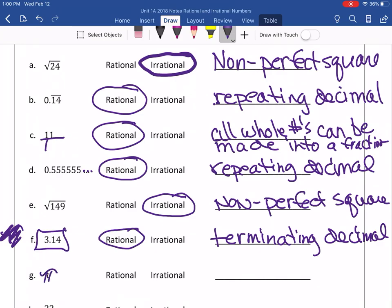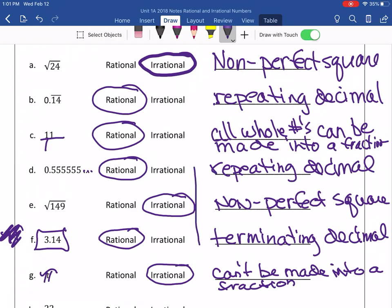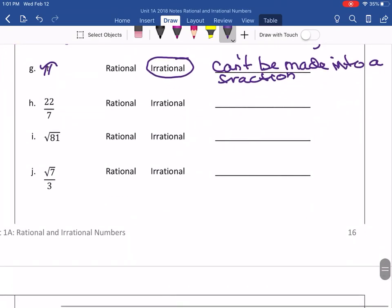So, does that represent rational or irrational? Now, we know that is irrational. And you can write: can't be made into a fraction.